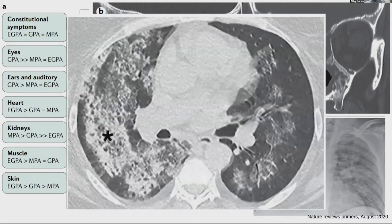This is a CT scan of a patient with pulmonary hemorrhage. More recently, it has become much more important to classify these diseases as seropositive or seronegative, as that has more prognostic implications than the different disease states themselves. PR3 ANCA vasculitis tends to have a more aggressive picture and is much more likely to relapse, whereas MPO ANCA vasculitis can have a smoldering process with more fibrosis on imaging.